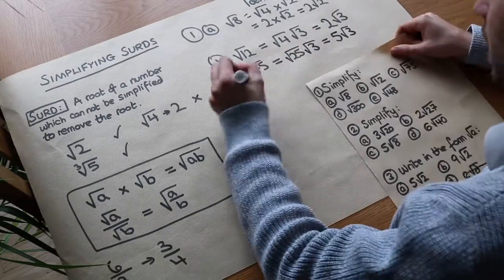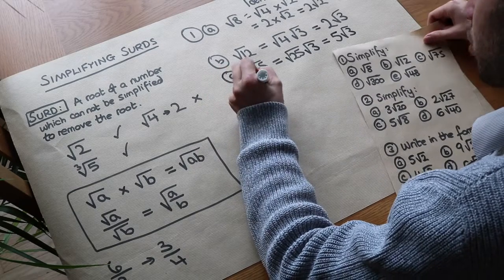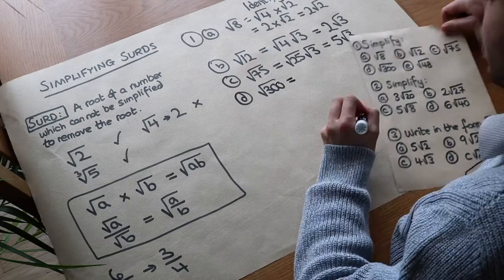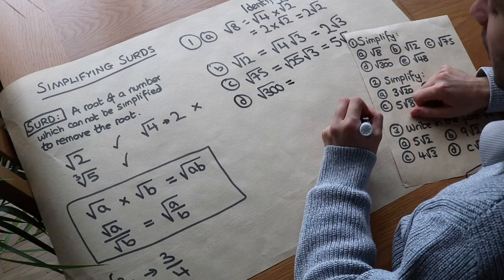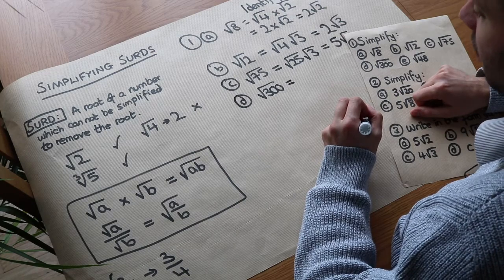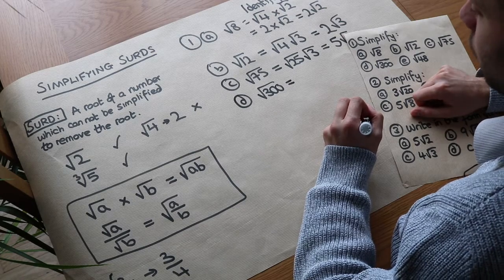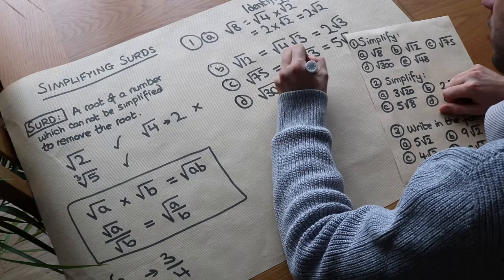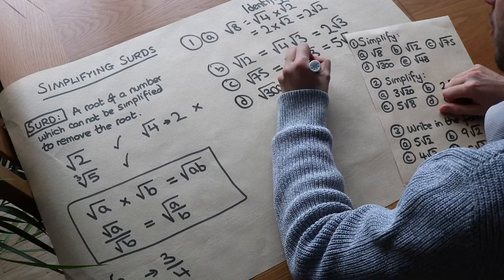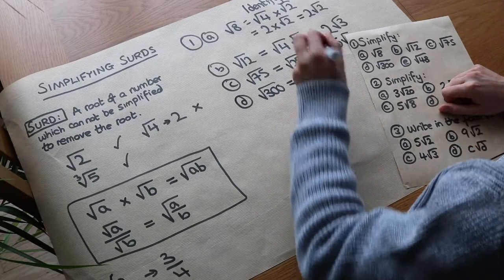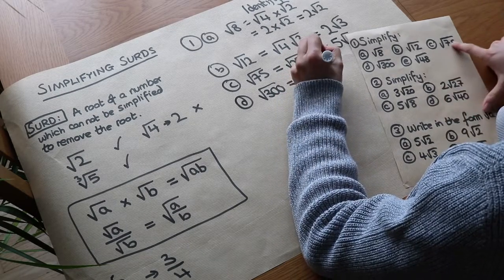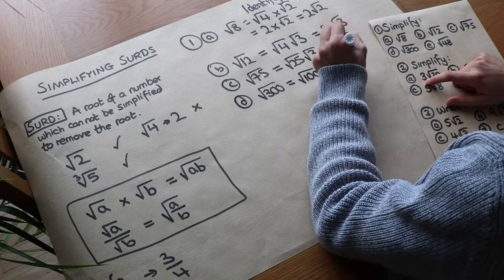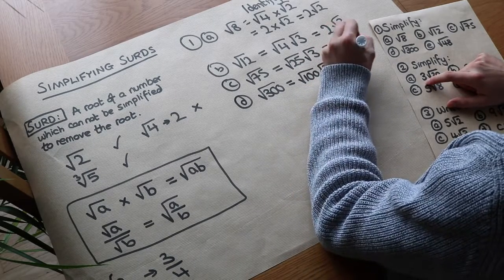What about root 300? The biggest square factor is 100. So we could write it as the square root of 100 — put the square number first — and 100 times 3 is 300. The square root of 100 is just 10, so it's 10 root 3.